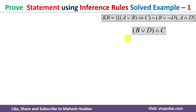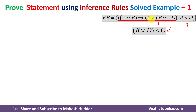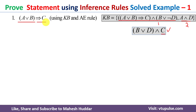In this case, we have been given two knowledge bases. This is the first knowledge base and this is the second one. Given these knowledge bases, we need to prove this statement. To prove it, what I will do is consider the first knowledge base and eliminate the 'and' here. So if I eliminate the 'and', we will get 'A or B implies C'.